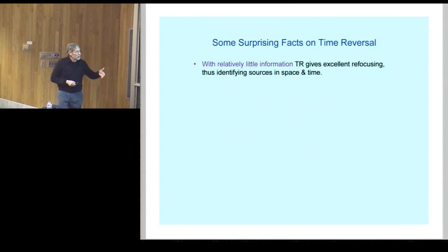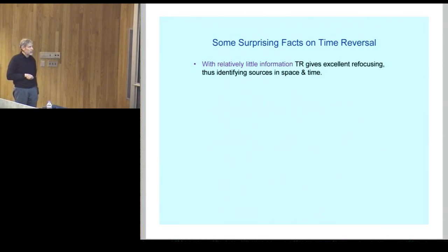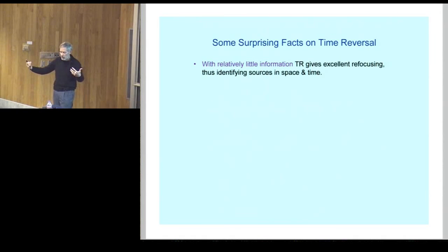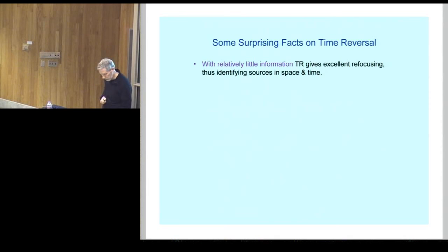I'll now give a list of some surprising facts about time reversal. First, with relatively little information, time reversal can give excellent identification. This process — starting from a local source, going backward in time, and identifying the local source — is called refocusing. The waves are refocused at the original source, and we can get very good refocusing from little information.